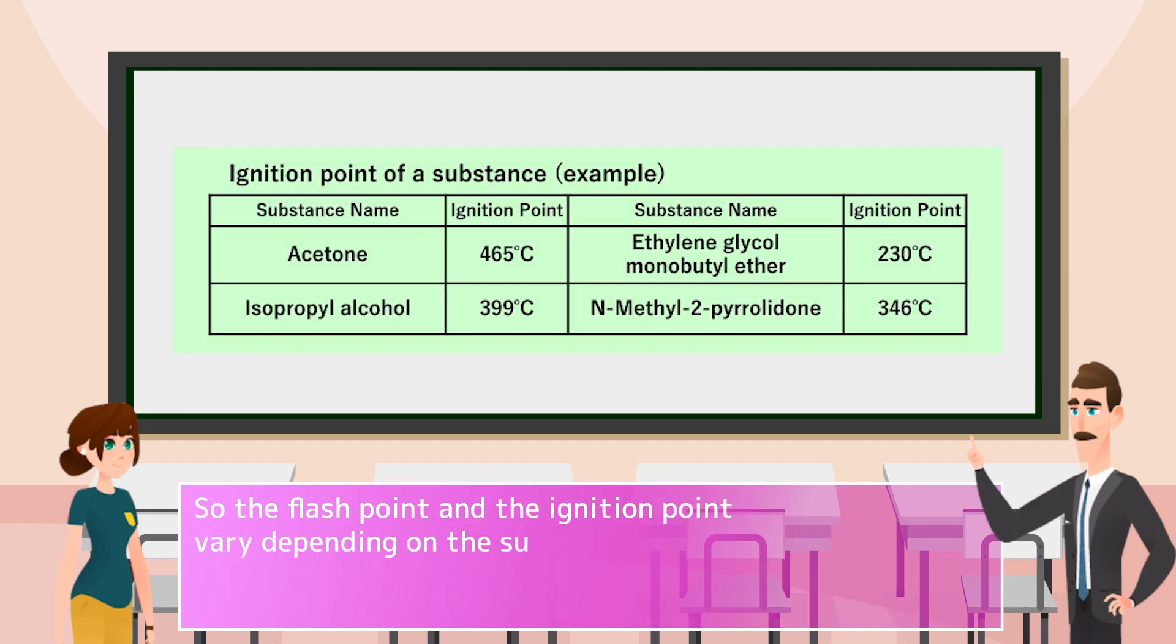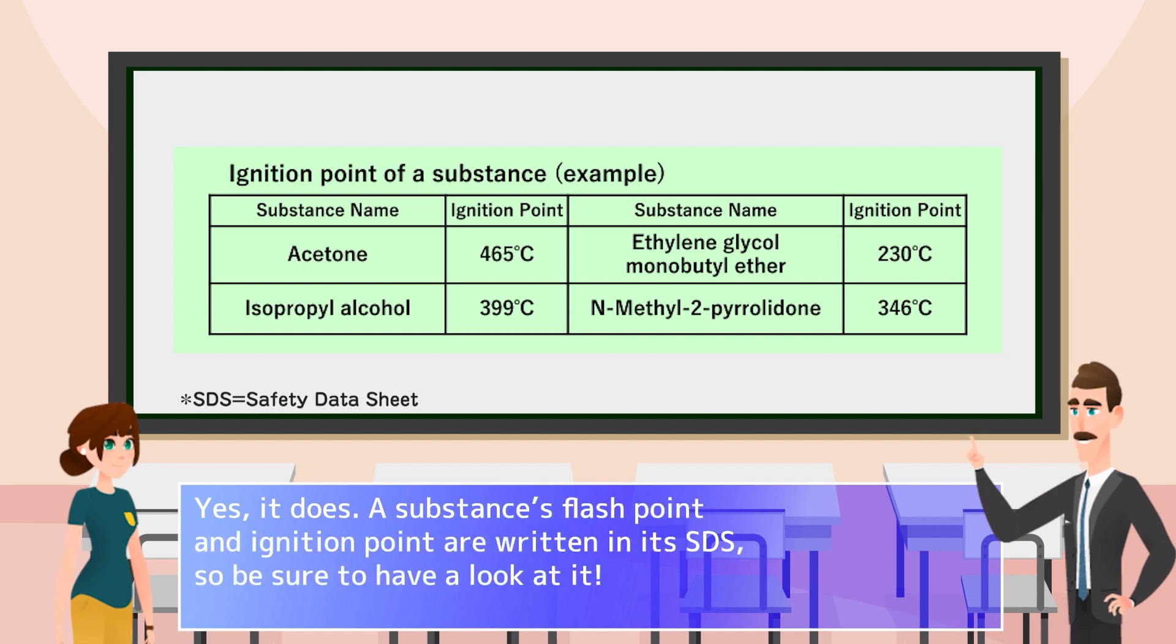So the flash point and the ignition point vary depending on the substance. Yes, it does. A substance's flash point and ignition point are written in its SDS, so be sure to have a look at it.